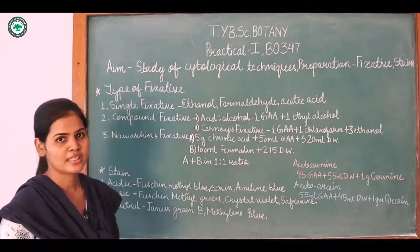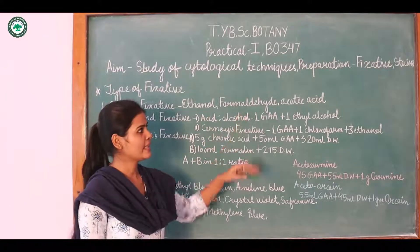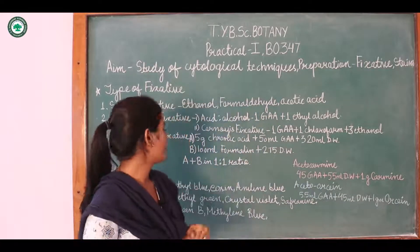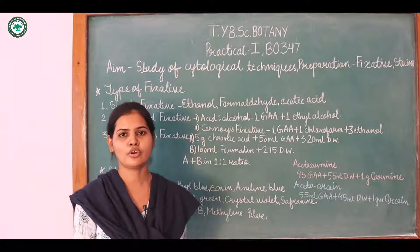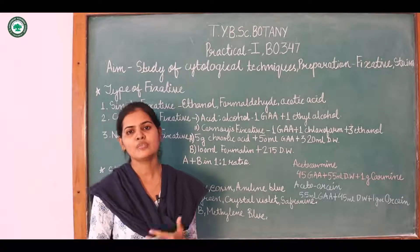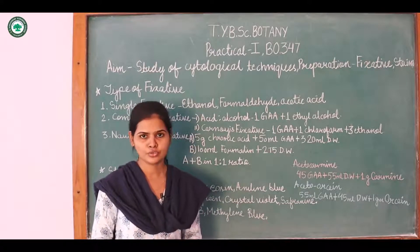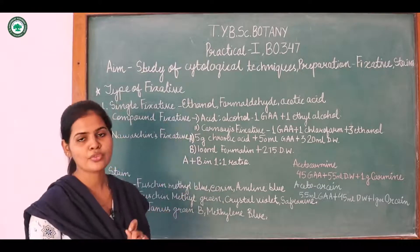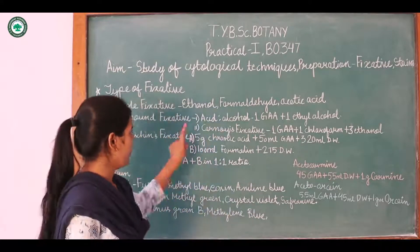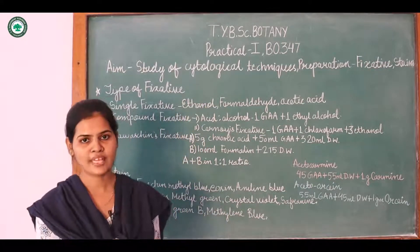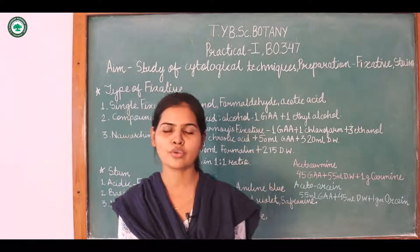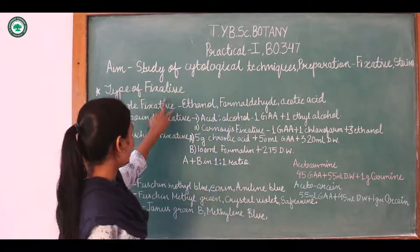The aim of our practical is the study of cytological technique, that is preparation of fixative and preparation of stain. First of all, let us start with the fixative — what is a fixative. A fixative is a chemical agent which will fix the cell or the tissue. It is used to immobilize the components of a cell, so that the cell components become immobilized. The agent used for fixing the cell or tissue is called a fixative.